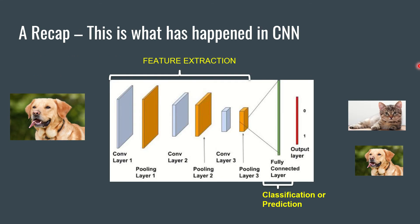How is CNN working? I have got an input image and I want to classify or predict what the image is — is it a dog or is it a cat? I will have a series of convolution layers followed by pooling layers, and after that I will have a fully connected layer and then we get the output. Convolution layer 1, pooling layer 1, convolution layer 2, pooling layer 2 — all these together are called the feature extraction part. Followed by that we have the fully connected layer, called the classification or prediction part. The output could be 0 or 1, which means cat or dog.